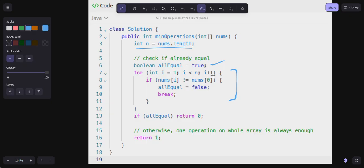Here i = 1, i < n, i++. First nums[i] I'm comparing with nums[0], then nums[2] I'll compare with nums[0]. If any one element is distinct, I'm simply going to set the value of allEqual to false and break.